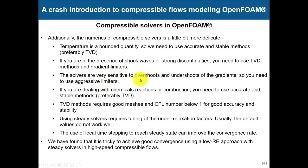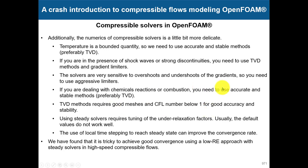Solvers are very sensitive to overshoot and undershoot of the gradient, so do not forget gradient limiters. When dealing with chemical reactions or combustion, use accurate and stable methods. TVD methods require good meshes and a CFL number below one. If you are using TVD methods, it is strongly recommended to keep your CFL below one — here we are talking about accuracy, not just fast convergence — so keep your CFL around one, no more than two.